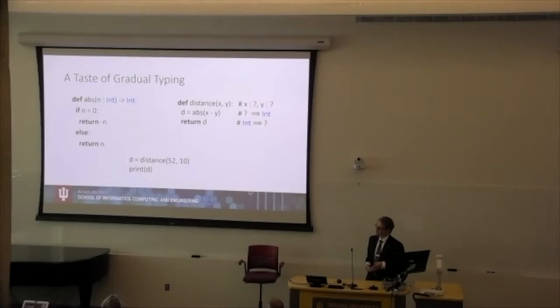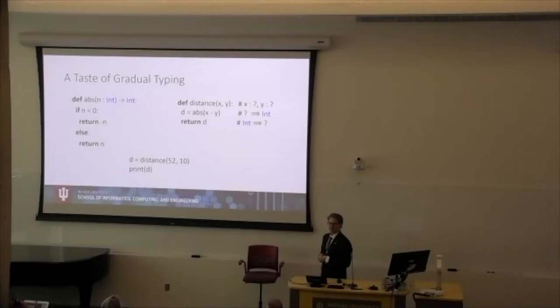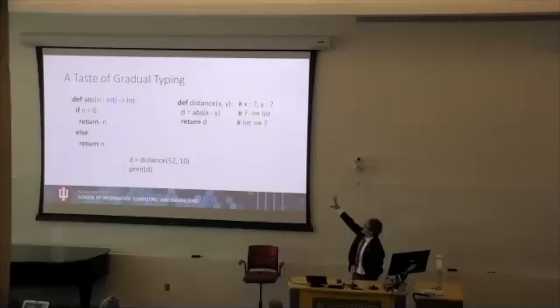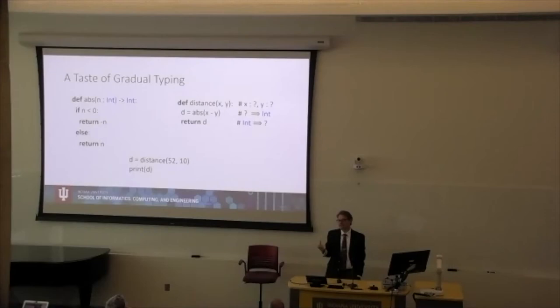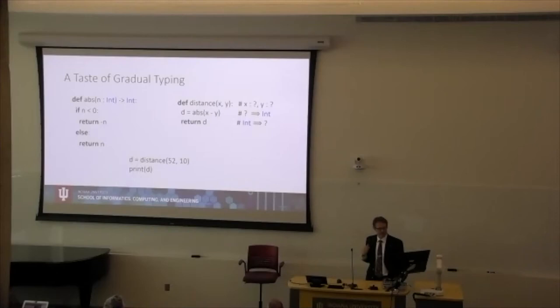Here's a quick taste of what this looks like. This is some code in Reticulated Python, a variation of Python that my student Michael Vitousek has built. On the left, we have type annotations on the function — in blue, they're saying we're expecting integers. On the right, there are no type annotations on the parameters. Under the hood, those X and Y parameters have a sort of question mark type, and the compiler inserts a cast that says 'is this thing really an integer?' and checks at runtime.